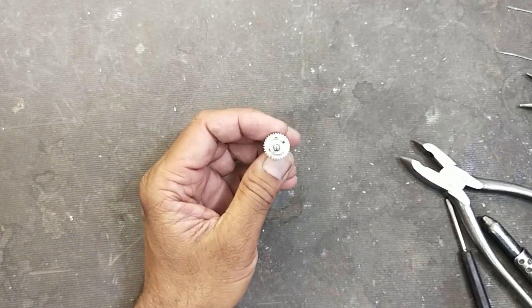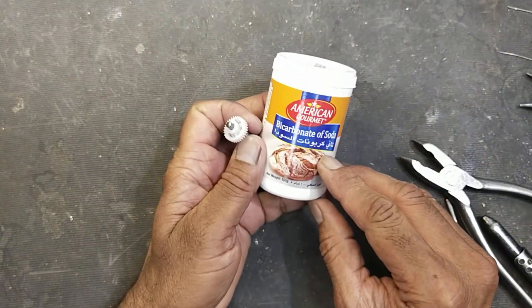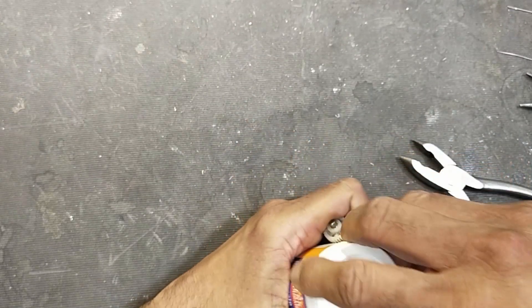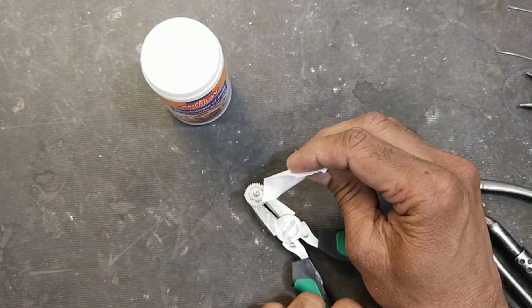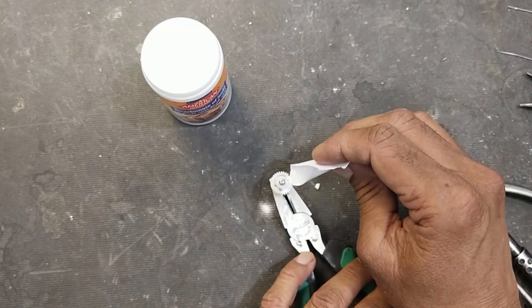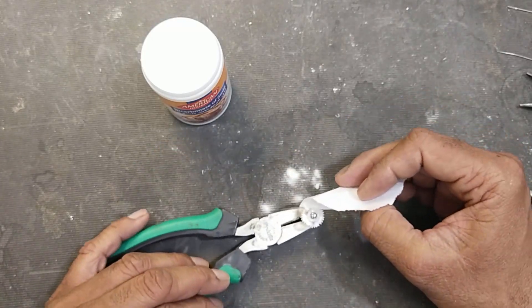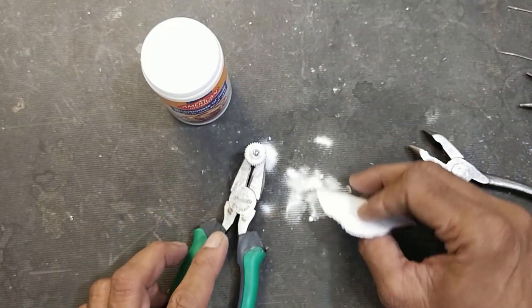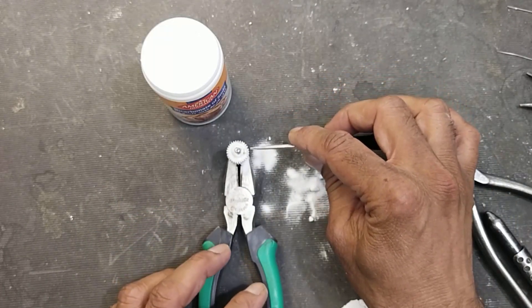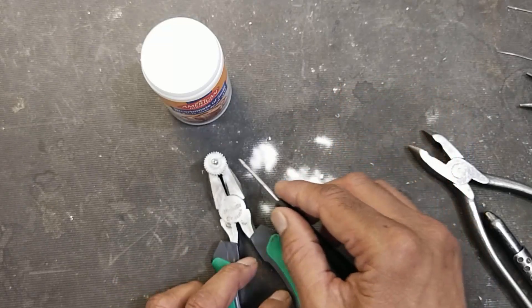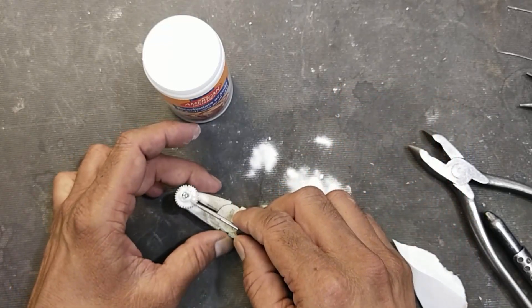Now I will use baking soda, bicarbonate of soda, and I will remove all the additional amount from the gear.